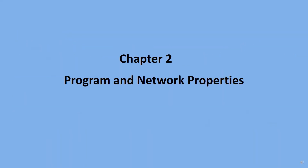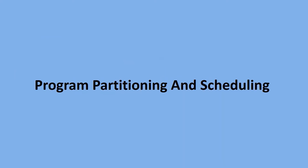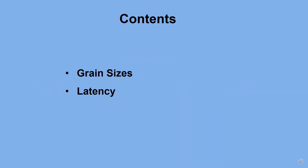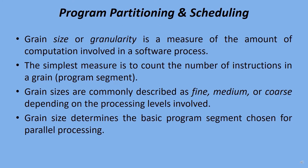Chapter 2 talks about Program and Network Properties. The contents are Grain Sizes and Latency, and Program Partitioning and Scheduling.